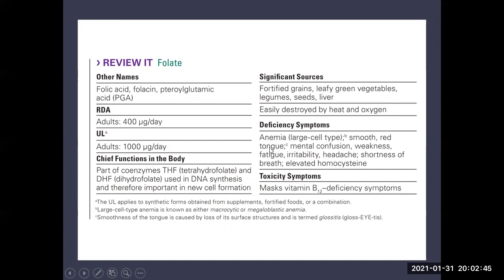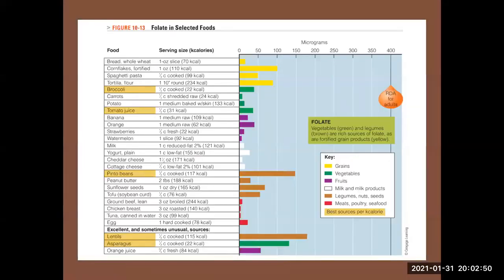Deficiency leads to macrocytic anemia. Deficiency during pregnancy may lead to diseases like spina bifida, as we will see later on.